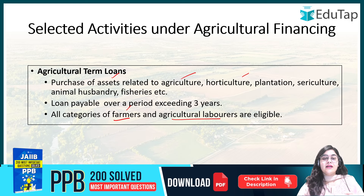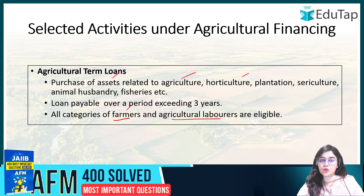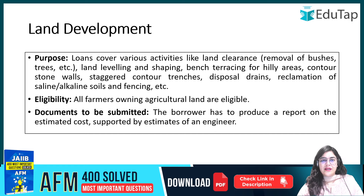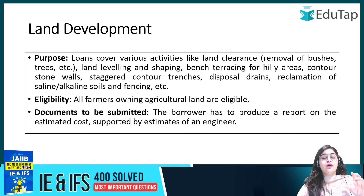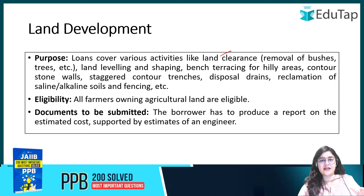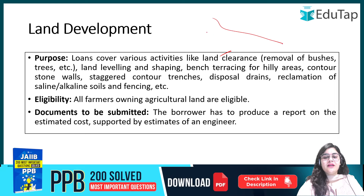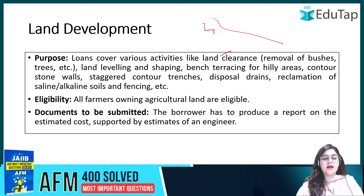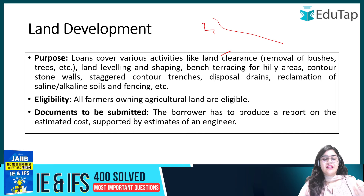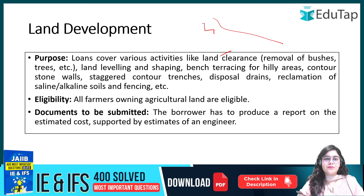Keep in mind that not only the owners of agricultural land, but also agricultural laborers get loans. The first activity is land development. If you want to develop land — clear bushes and trees, level land, do bench terracing in hilly areas — you can get a loan. You will be able to make stones, trenches, drains, and treat your soil whether it is saline or alkaline. Fencing is also covered. You can do all these things for land development.